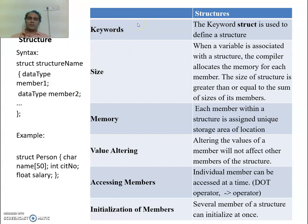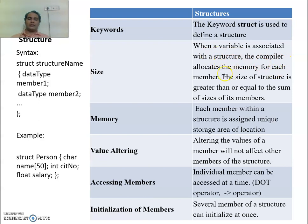Let us understand the key concepts: size, memory, value altering, accessing members, and initialization of members regarding the structure. The keyword struct is used to define a structure. When a variable is associated with a structure, the compiler allocates memory for each member — 50 bytes for character (1 byte each), 2 bytes for integer, and 4 bytes for float salary.